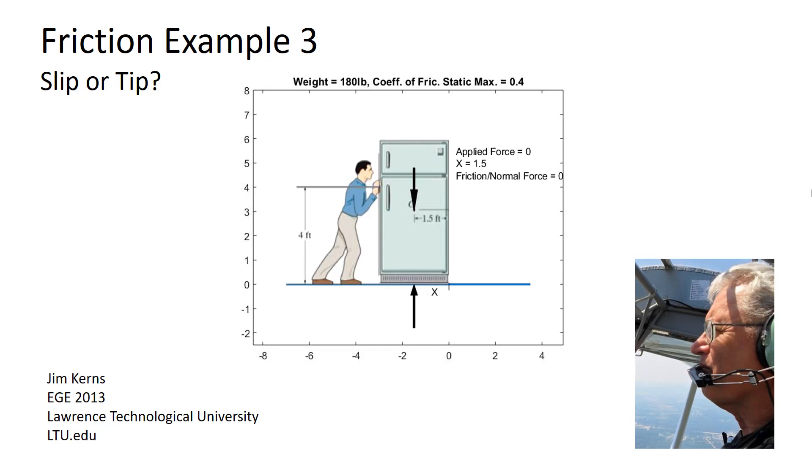And that is a question of does the object slip or does it tip? This is an important consideration. Sometimes you knock into a lamp, it falls over and sometimes you have a little brother to blame and sometimes you don't. But let's talk about this from an engineering perspective.